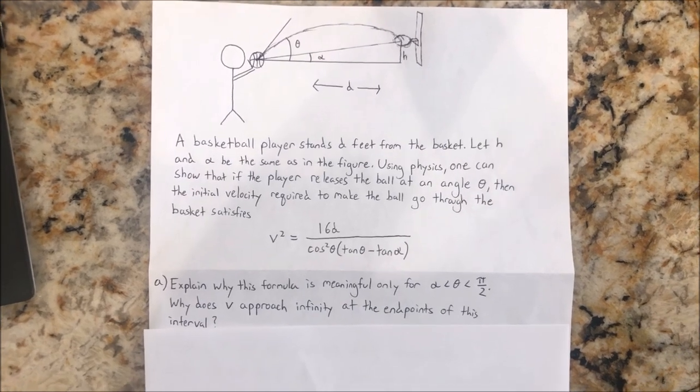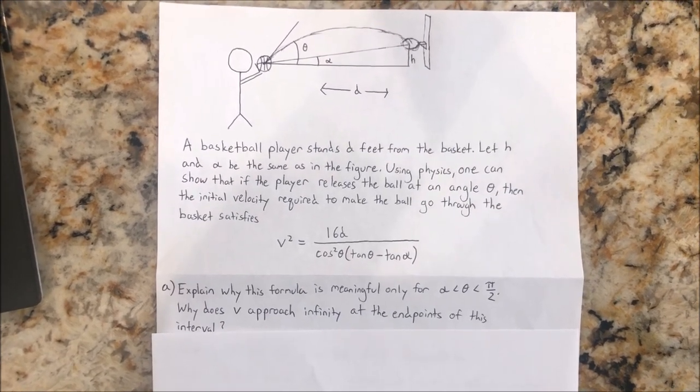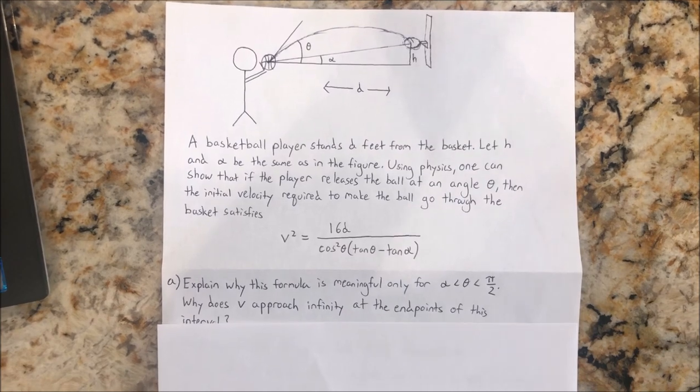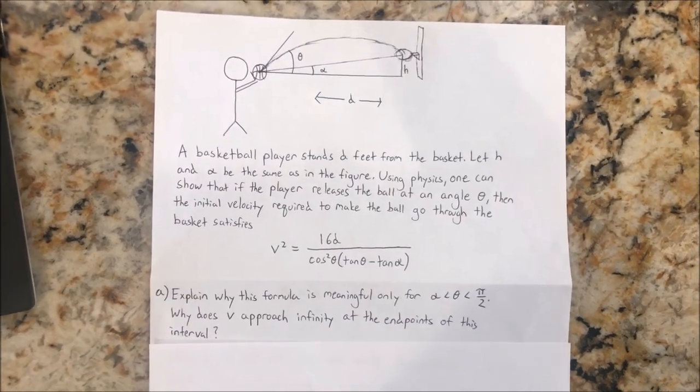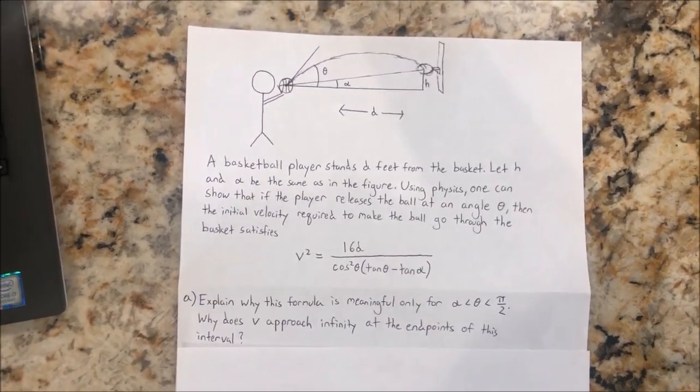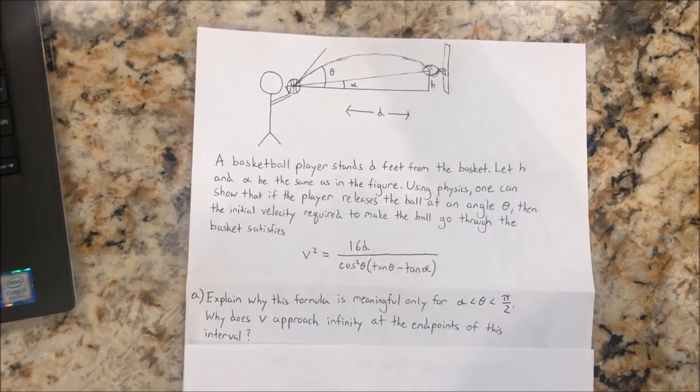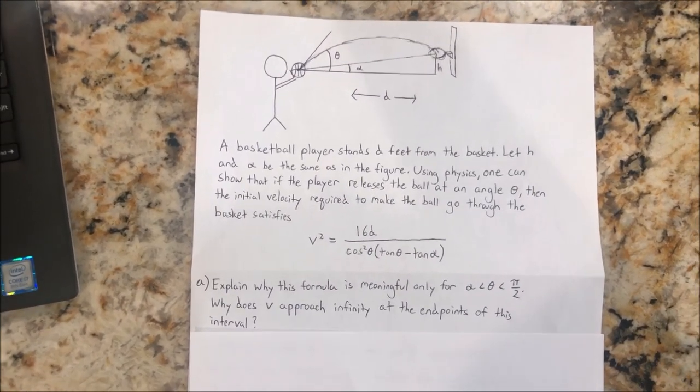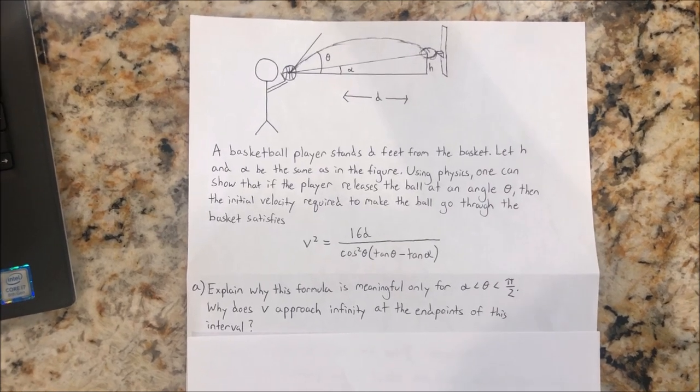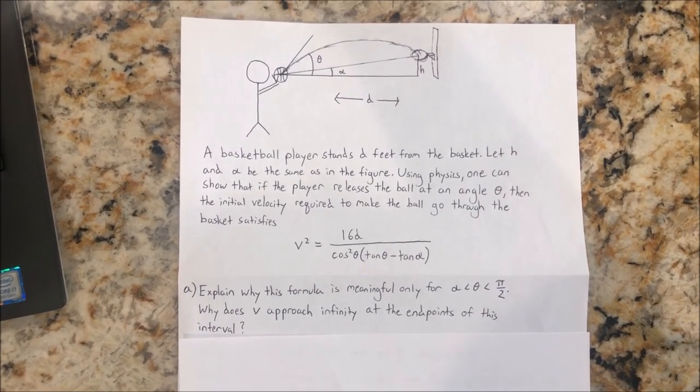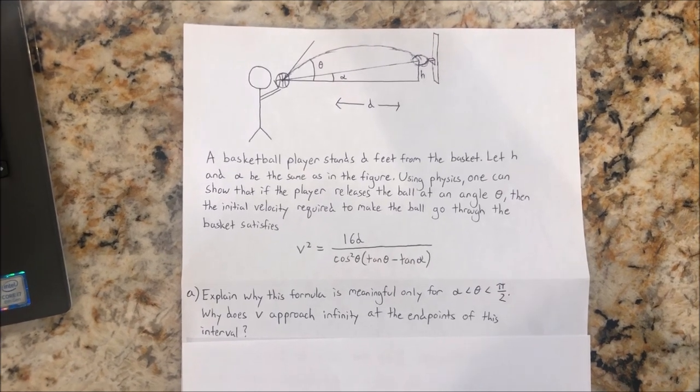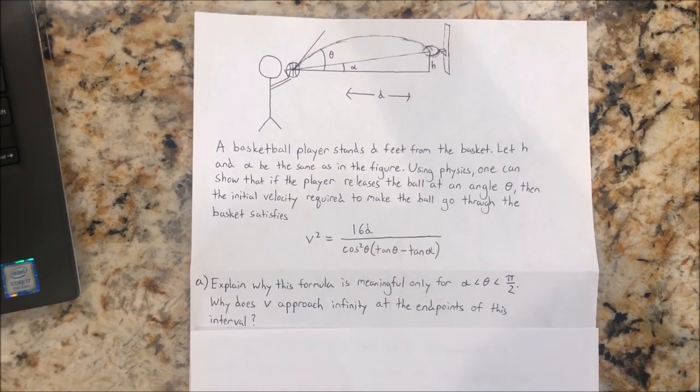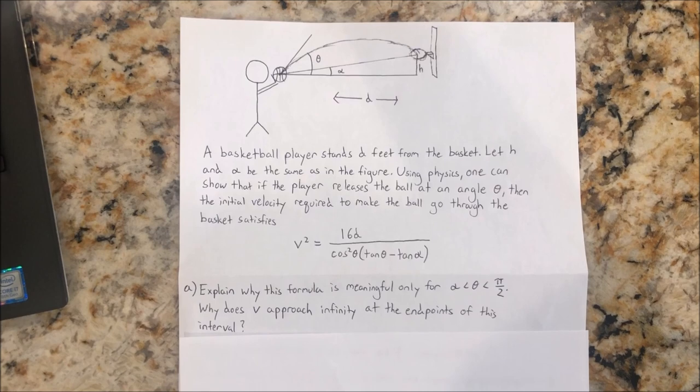Explain why this formula is meaningful only for thetas between pi over 2 and alpha. Why does v approach infinity at the endpoints of this interval? Alpha is equal to zero corresponds to shooting the ball directly at the basket, while alpha is equal to pi over 2 corresponds to shooting the ball directly upward. In either case, is it possible for the ball to go into the basket.